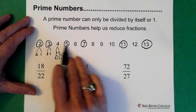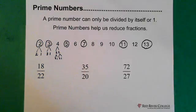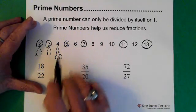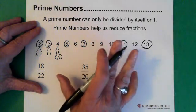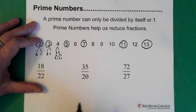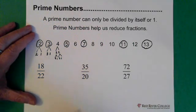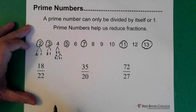Normally you only have to worry about two, three, five, sometimes seven. But paying attention to the prime numbers really helps you when you're working through reducing. So let's look at some of these fractions here.